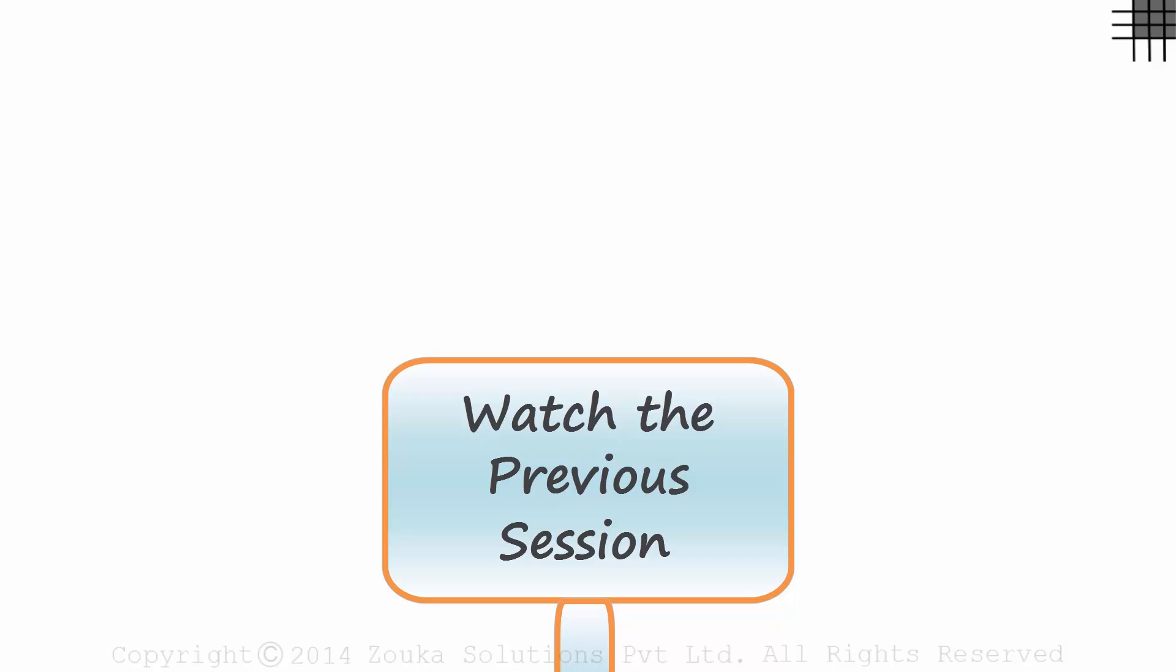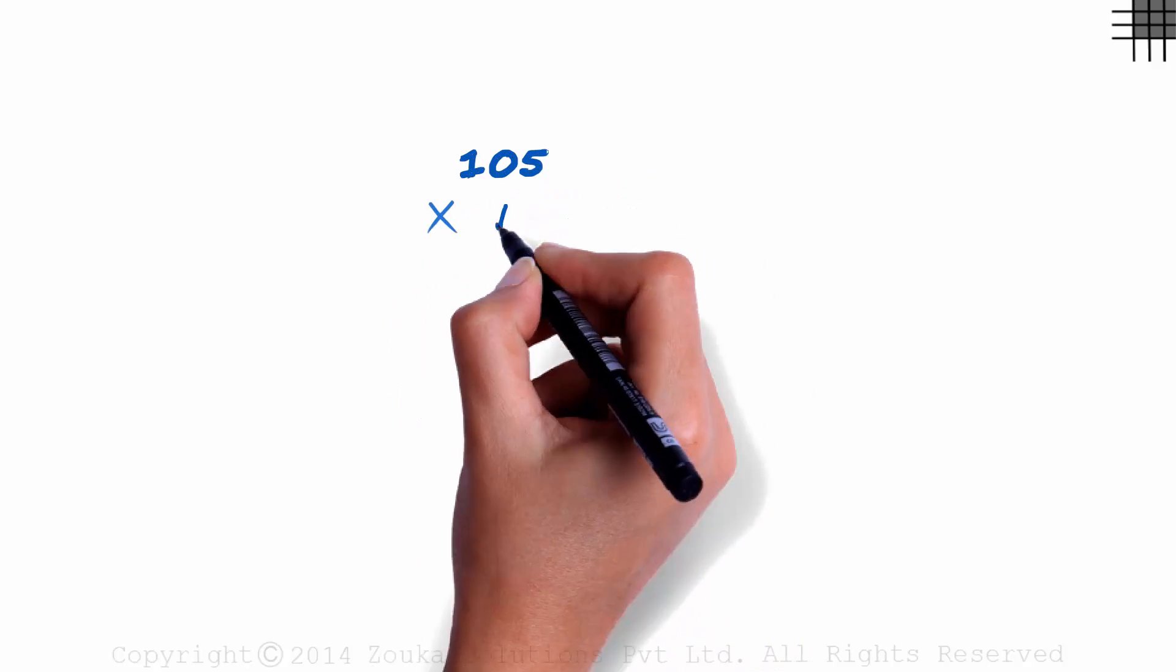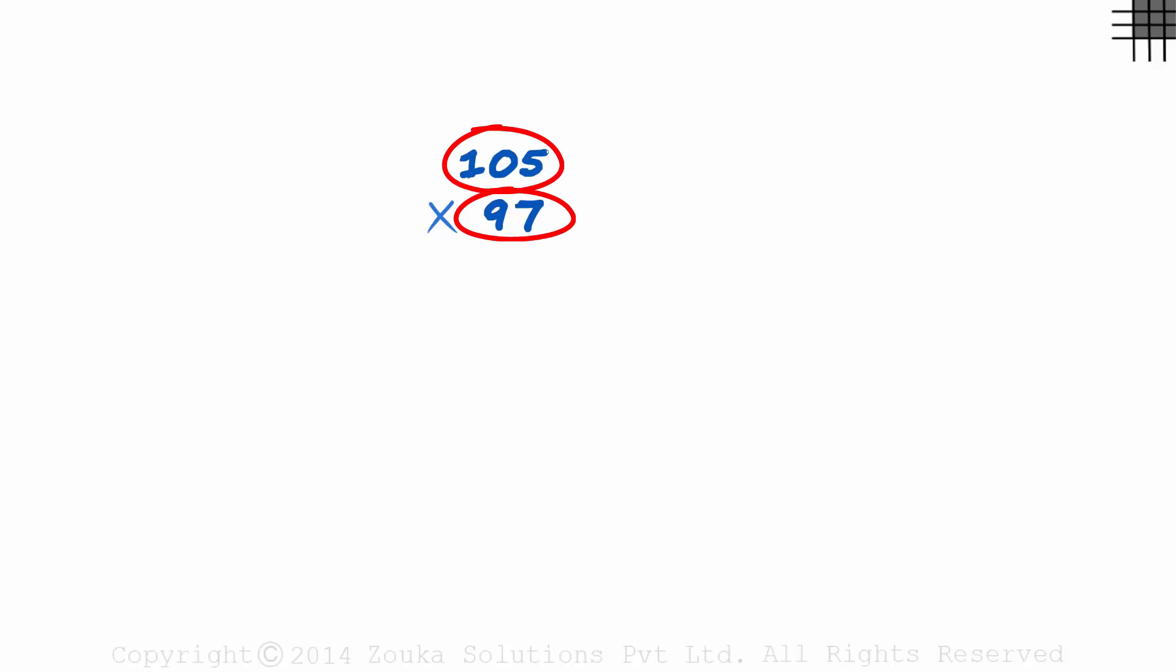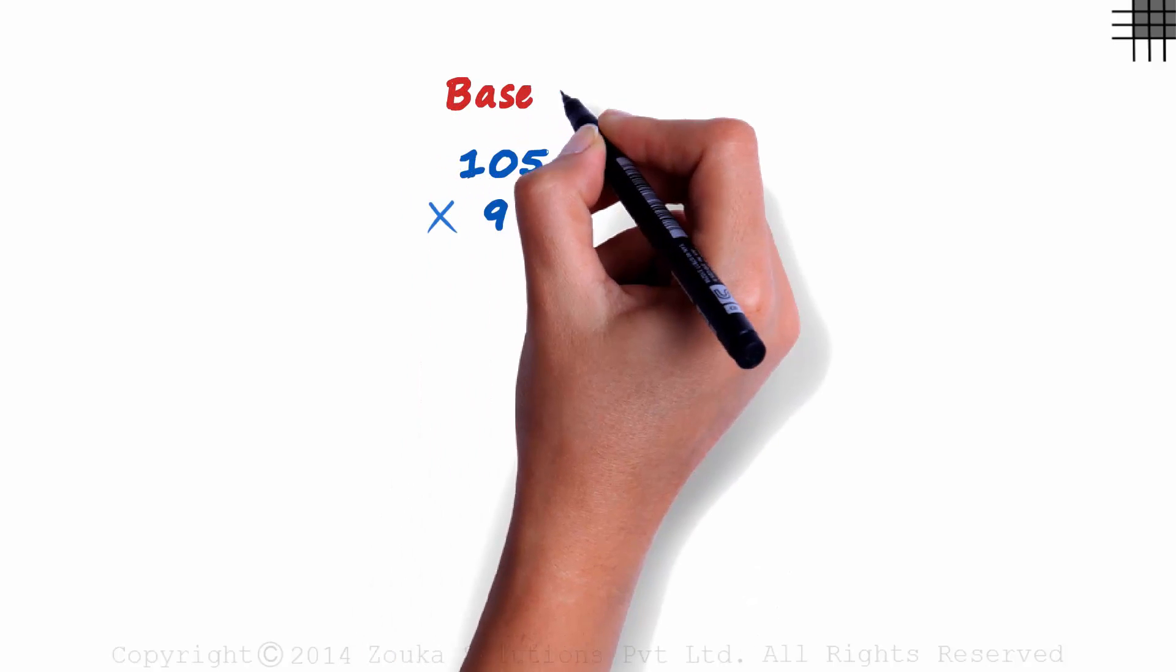Based on what we saw in the previous part of the session, let's try multiplying 105 with 97. Both numbers are close to 100, so let's consider the base as 100.